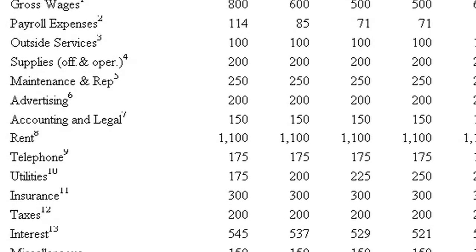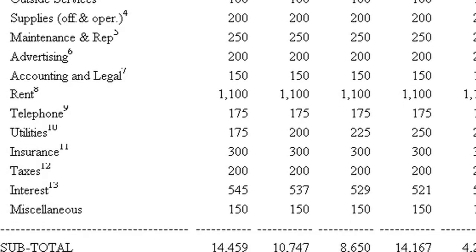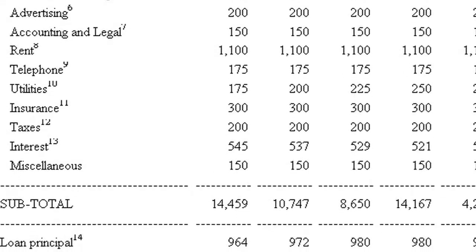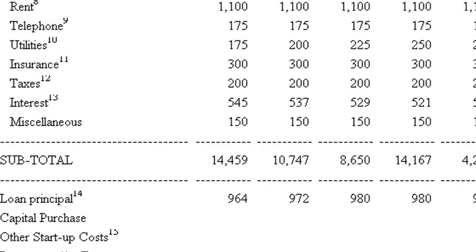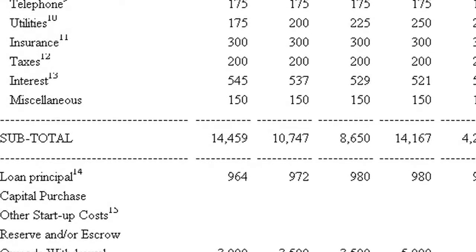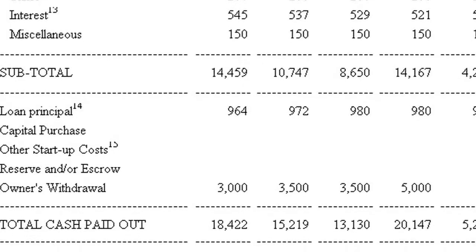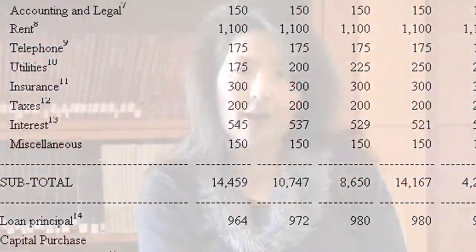The next major section is cash used or provided by investing activities. If a company has used its cash to buy or build fixed assets, you'll see that in this section. If you're looking at a financial institution or a bank, you'll see the changes in loans in this section.